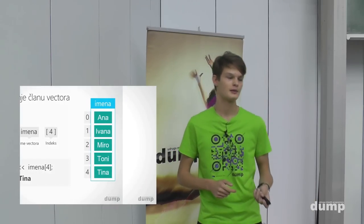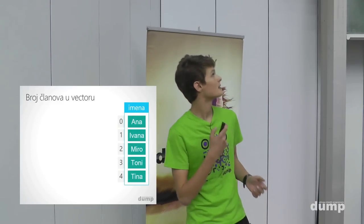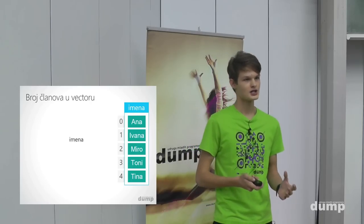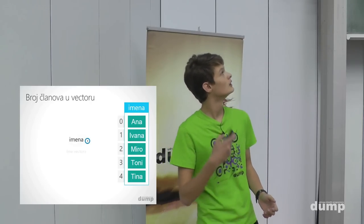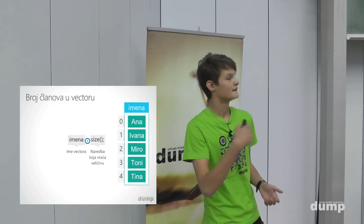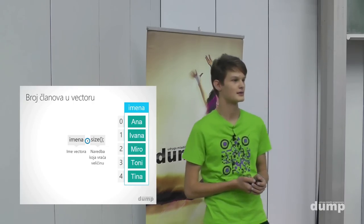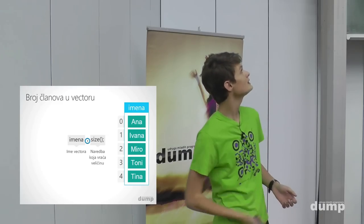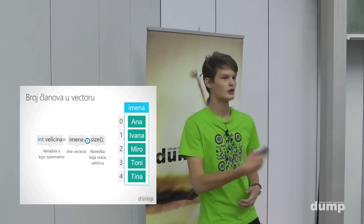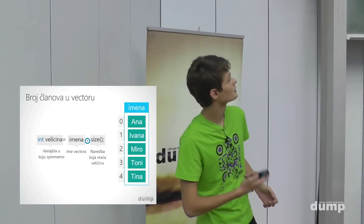Jako često moramo znati koliko članova ima naš vektor. To dohvaćamo ovako: navodimo ime vektora, pišemo točku i koristimo naredbu size(), koja vraća broj članova. Budući da size() vraća cijeli broj, rezultat možemo spremiti u int varijablu 'veličina'. Ako ispišemo veličinu ovog vektora, ispisat će nam se 5 — jer imamo pet članova.